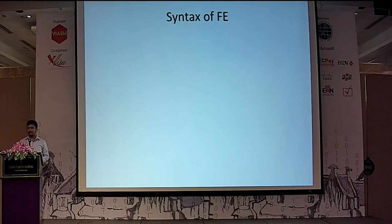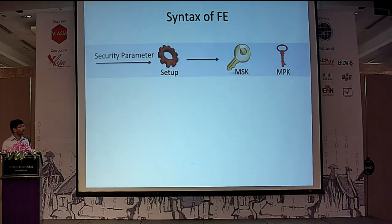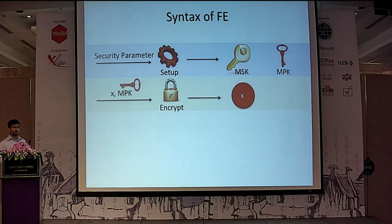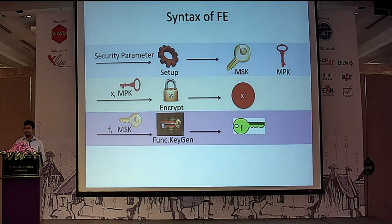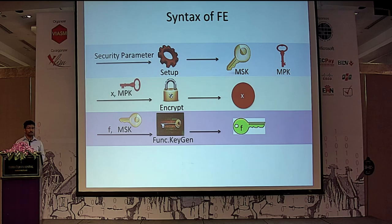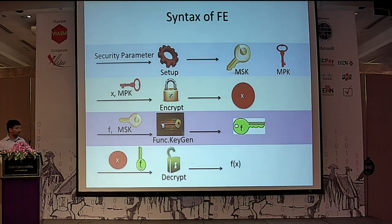Let us formally describe the syntax of a functional encryption scheme. There is a setup algorithm that outputs a master secret key and a master public key. The master public key is given to everyone, who can use it with their message x to run the encryption algorithm and produce a ciphertext. Whenever a decryptor wants to evaluate some function f, it talks to the trusted party, who runs the function key generation algorithm using f and the master secret key to compute the function secret key. The decryption algorithm then takes any ciphertext and the function secret key to compute f(x).